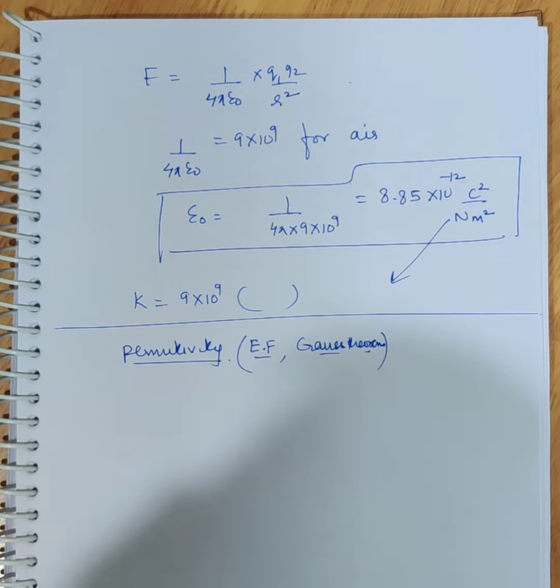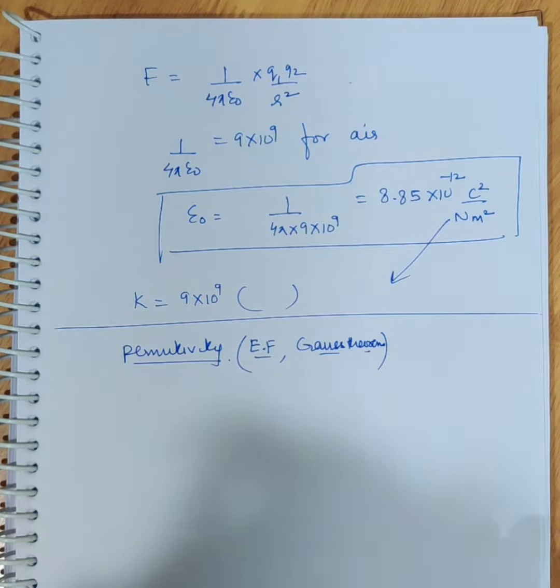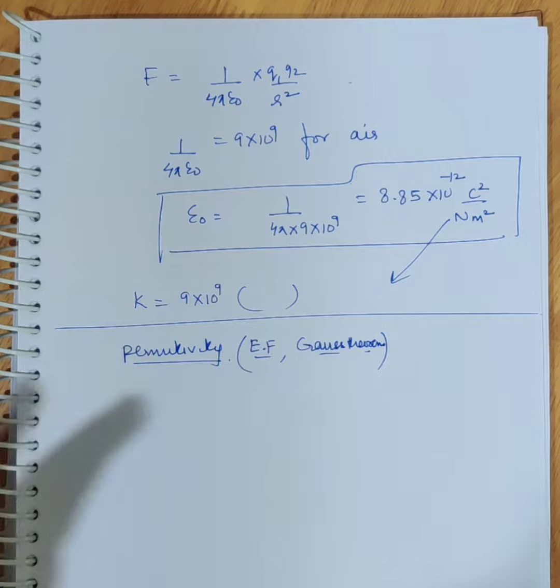So we will be doing it later when we are done with electric field and Gauss theorem. The moment I introduce Gauss theorem, that very moment I will come back to permittivity. It's very important to explain because in none of the books has permittivity been explained, not even a word about it. So we do not know what permittivity is when we study any book out in the market.